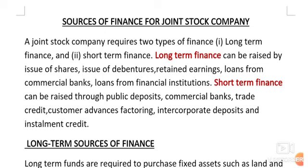Long-term finance sources include retained earnings, loans from commercial banks, and loans from financial institutions. Retained earnings means some profit was left over and set aside for future use. Loans can be taken from commercial banks or financial institutions.